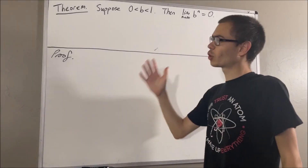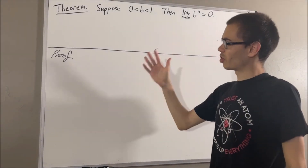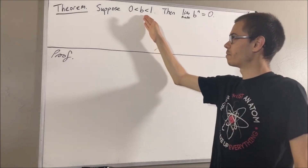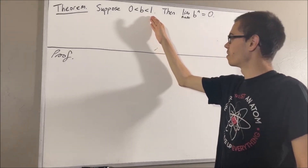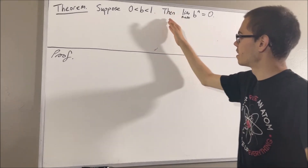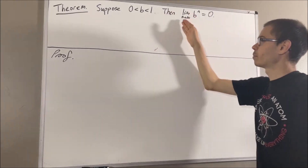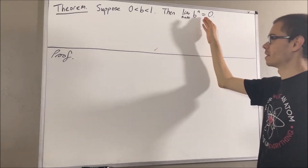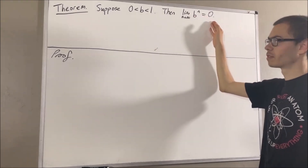In this video, we are going to prove the following theorem. Suppose 0 is less than b is less than 1. Then, the limit as n approaches infinity of b to the power of n is equal to 0.